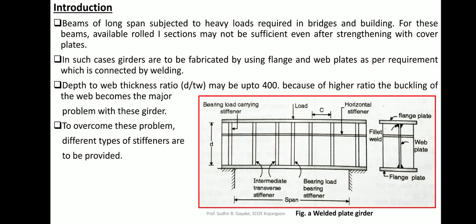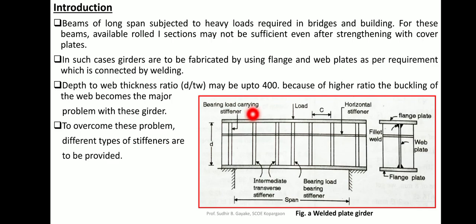Girders are fabricated using flange and web plates connected by welding. The depth-of-web to thickness-of-web ratio may be up to 400. As this ratio increases from 67ε to 400, the web becomes thinner and more prone to buckling, but it results in an economical section when stiffeners are provided to overcome that disadvantage. To overcome buckling, different types of stiffeners are provided, as seen in the cross-section and elevation views.